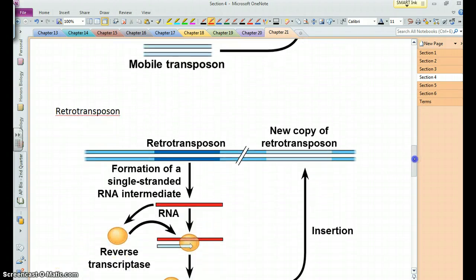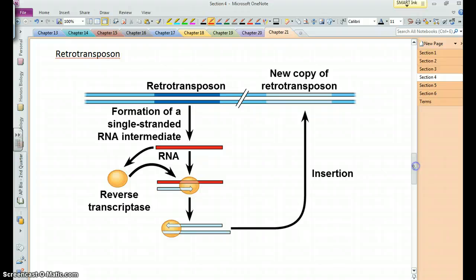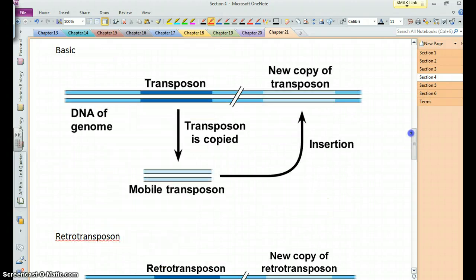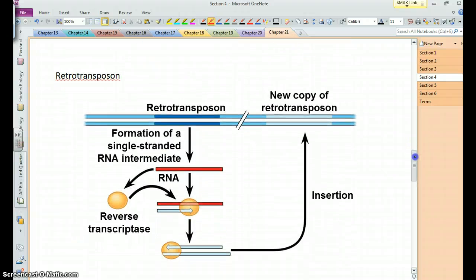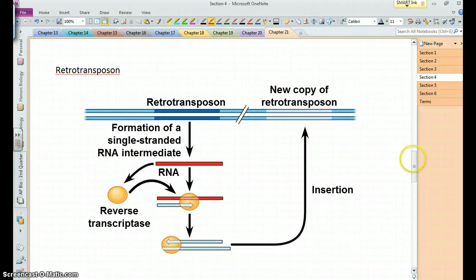And there's also another type of transposon, these are called retrotransposons, and in them they have transcription of an RNA that basically codes for making a reverse transcriptase which then causes that RNA to be used to make some DNA and then that DNA inserts somewhere else. So you get the same result as your basic transposon but retrotransposons have this extra step, and so these transposons make copies of themselves and spread around.